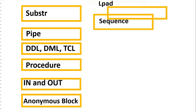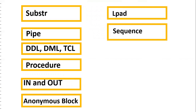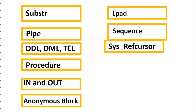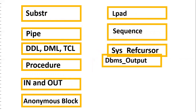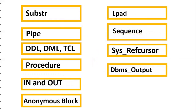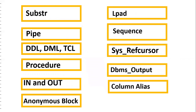You should also know LPAD for padding purposes, sequences to generate a primary key, cursors, and DBMS_OUTPUT to see results on the console, as well as column aliases. If you know these concepts, it will be easy to understand the requirement.